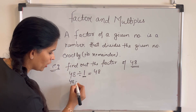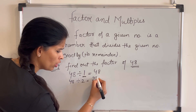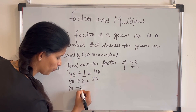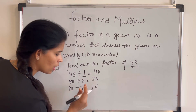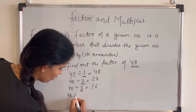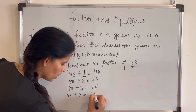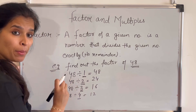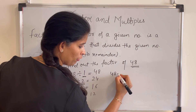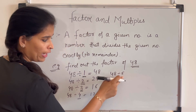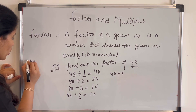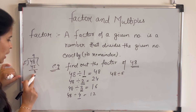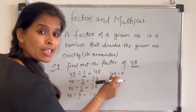Now we'll check another number: 2. 48 divided by 2 is 24, so 2 is also a factor of 48. Next, 3: 48 divided by 3 is 16, so 3 is a factor of 48. Next, 4: 48 divided by 4 is 12, so 4 is a factor of 48. These numbers divide 48 completely with no remainder. Now if I divide 48 by 5, there is a remainder of 3.